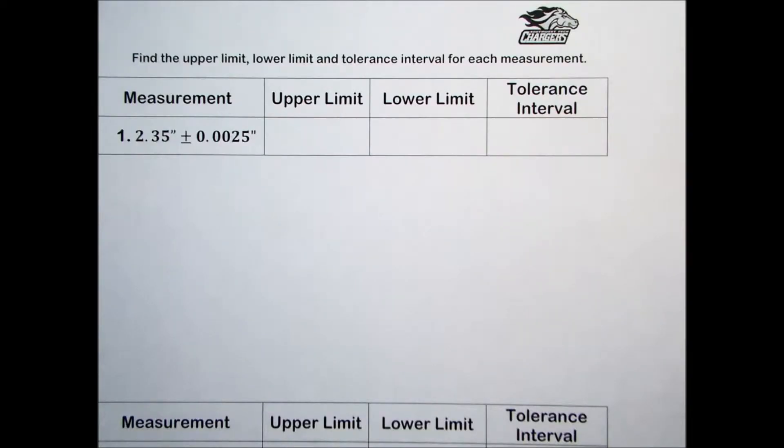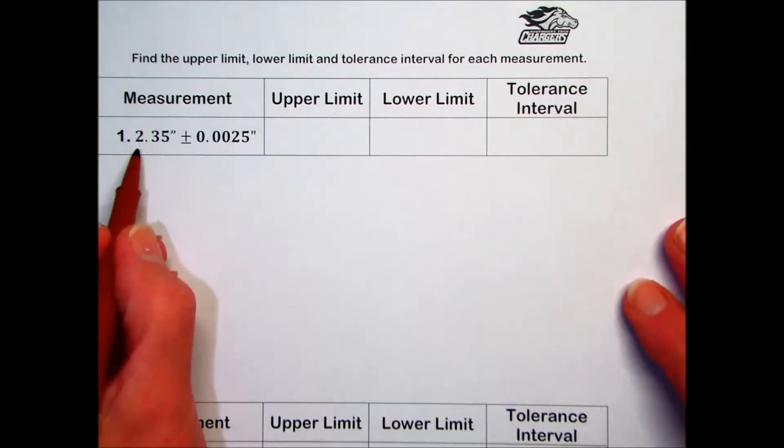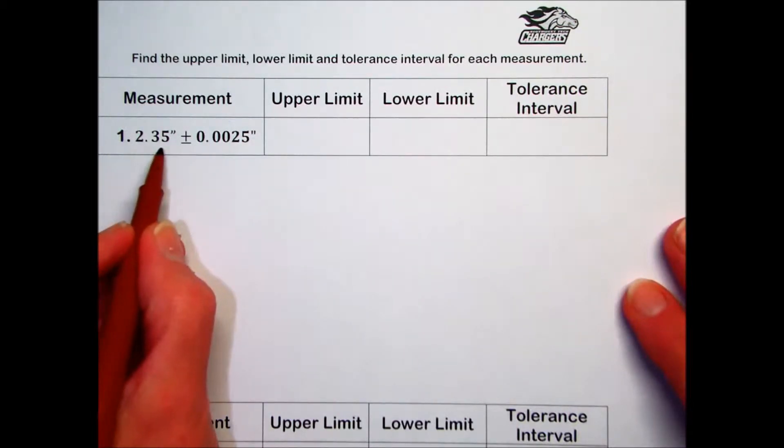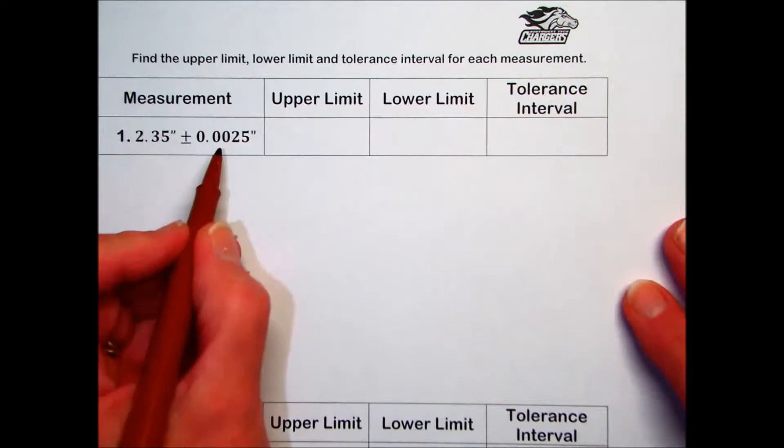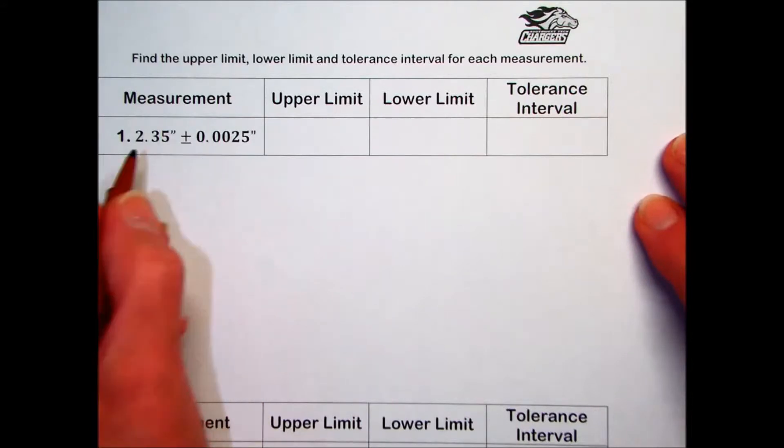Practice Set 7. Find the upper limit, lower limit, and tolerance interval for each measurement. In number one, they're giving us a standard measure of 2.35 inches plus or minus a tolerance of 25 ten-thousandths of an inch.